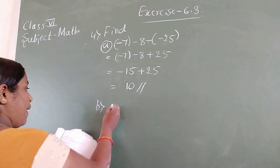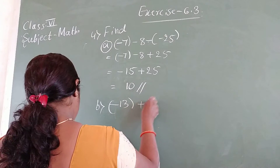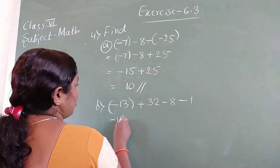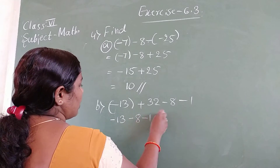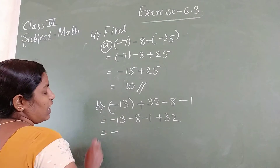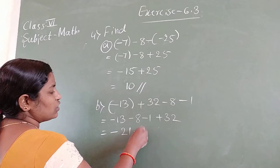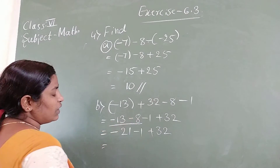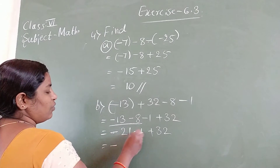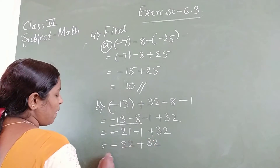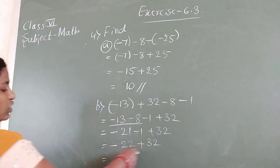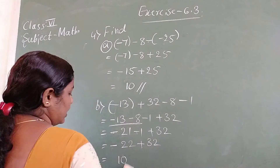Part B: minus 13 plus 32 minus 8 minus 1. Simplify. Group all negatives: minus 13, minus 8, minus 1 — add them: 13 plus 8 plus 1 equals 22. So minus 22 plus 32. Different signs, go for subtraction: 32 minus 22 equals 10. Because 32 is bigger, answer is positive 10.